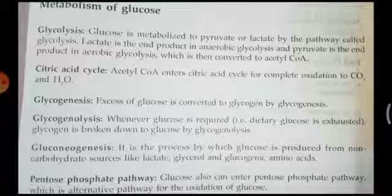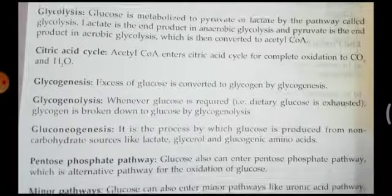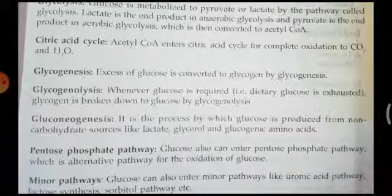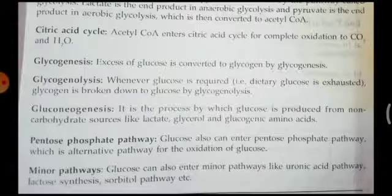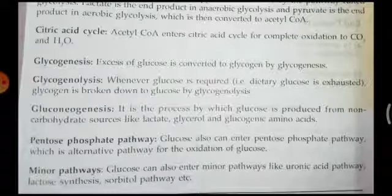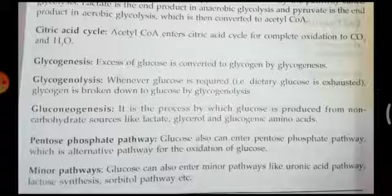Pyruvate is then converted to acetyl-CoA. The pyruvate produced from glycolysis is converted to acetyl-CoA, and that acetyl-CoA further degrades into carbon dioxide in the citric acid cycle, also called the Krebs cycle. Acetyl-CoA enters the citric acid cycle for complete oxidation to carbon dioxide and water. Glycogenesis — the second part 'genesis' indicates it is a synthesis pathway or anabolic pathway.